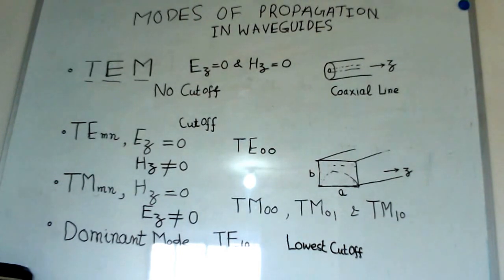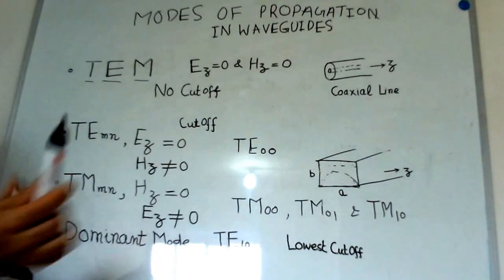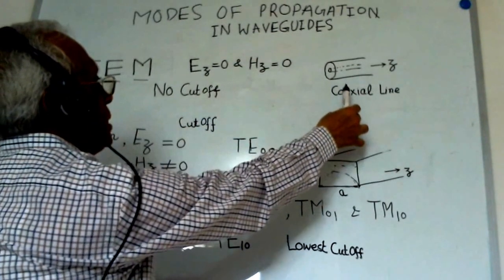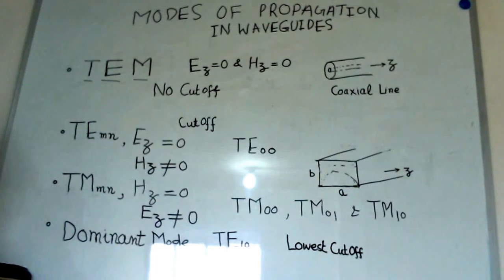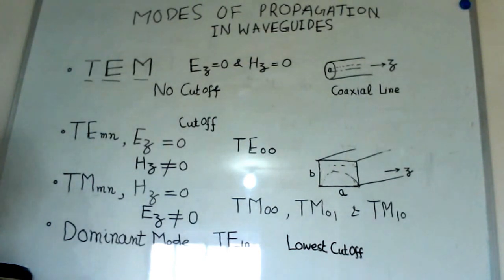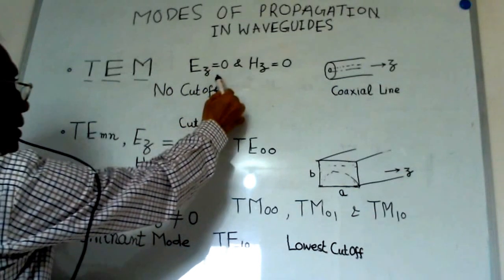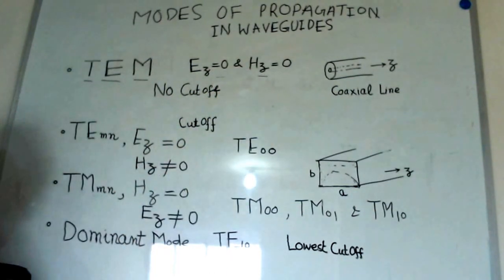Here, we have given a figure of a coaxial line, and the direction of propagation is shown as Z. When E and H fields are transverse, that means they will not have any component of electric field or magnetic field in the direction of propagation. That means Ez is zero and Hz is zero.